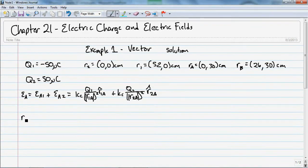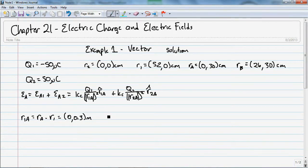So I have R1A is equal to R-A minus R1. And that's equal to R-A is 0, 0.3 meters minus R1. So that's 0.52, 0 meters. So that's going to be minus 0.52, 0.3.